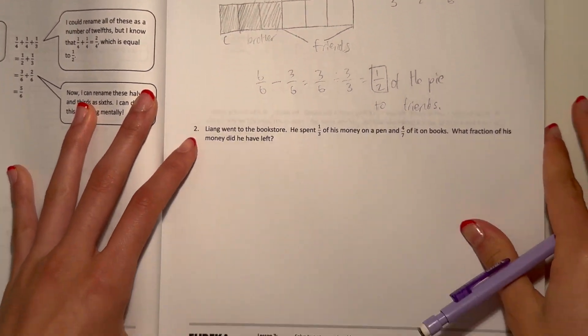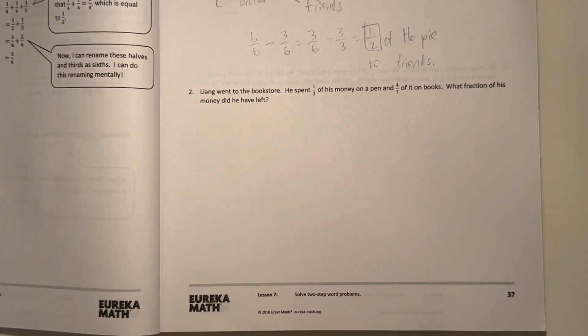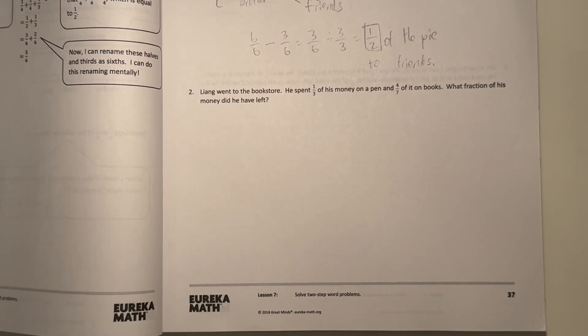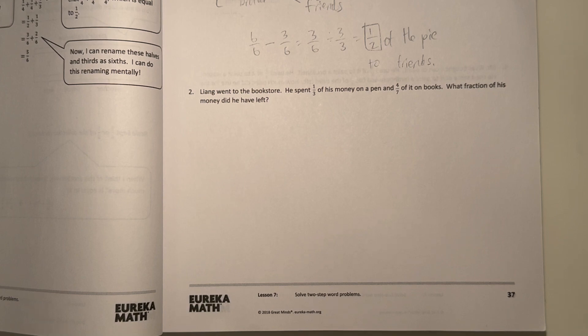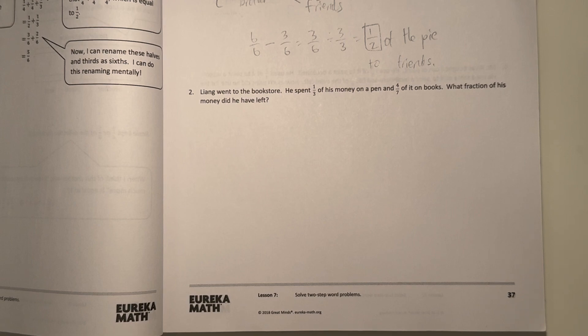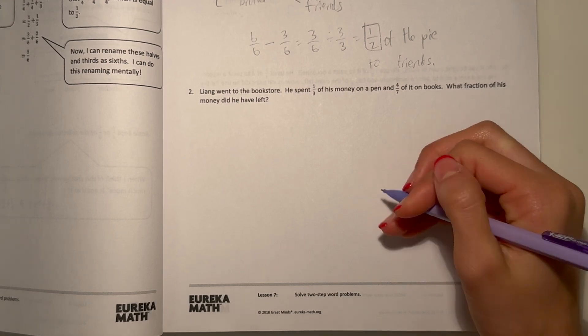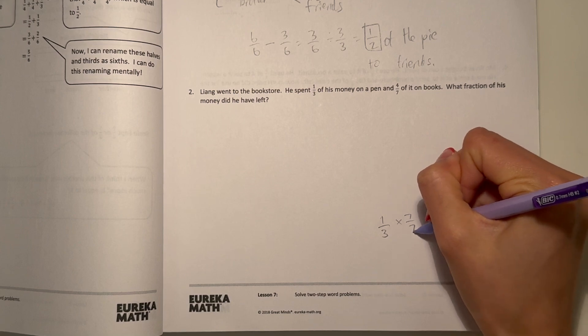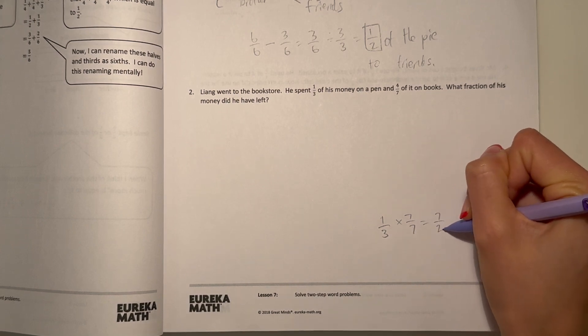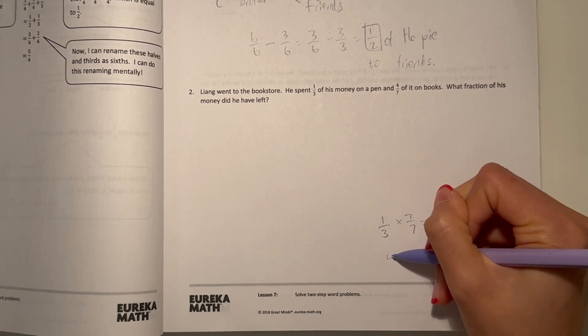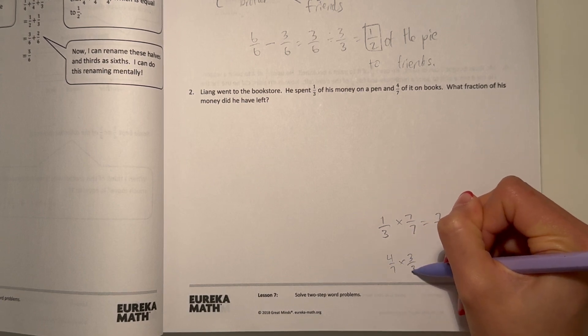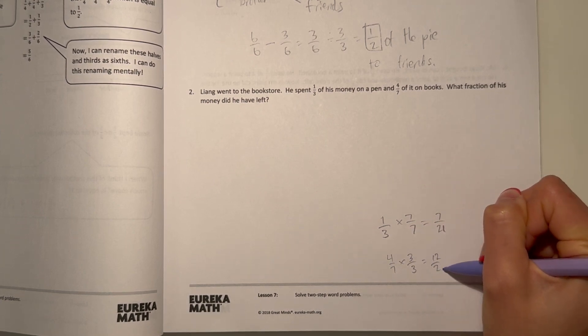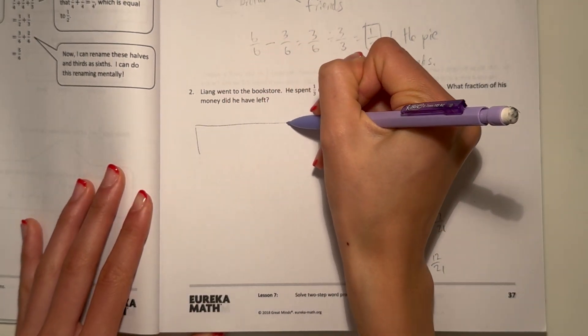Number two. Leon went to the bookstore. He spent one-third of his money on a pen and four-sevenths of it on books. What fraction of his money does he have left? So first, we need to make sure these two fractions have the same denominator. One-third and four-sevenths. So, we'll just multiply three by seven and seven by three. Times seven, twenty-one. And four-sevenths times three is twelve over twenty-one. So, let's make our tape diagram now.